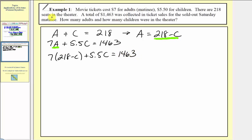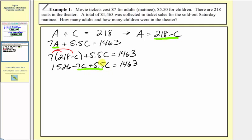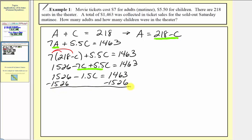Next, we clear the parentheses by distributing. Seven times 218 equals one thousand five hundred twenty six, so we have one thousand five hundred twenty six minus seven C plus five point five C equals one thousand four hundred sixty three. Combining like terms, negative seven C plus five point five C is negative one point five C. So we have one thousand five hundred twenty six minus one point five C equals one thousand four hundred sixty three. Subtracting one thousand five hundred twenty six from both sides gives us negative one point five C equals negative sixty three.